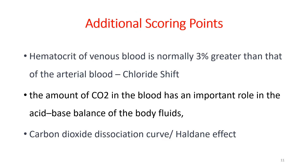For additional scoring points, you can mention an applied aspect of chloride shift. The hematocrit of venous blood is normally 3% greater than that of arterial blood, and this is because of the chloride shift. You can also mention the importance of this dissolved amount of carbon dioxide in the acid-base balance of body fluids, and mention a word or two about the carbon dioxide dissociation curve and the Haldane effect, which will be covered later in a separate module.